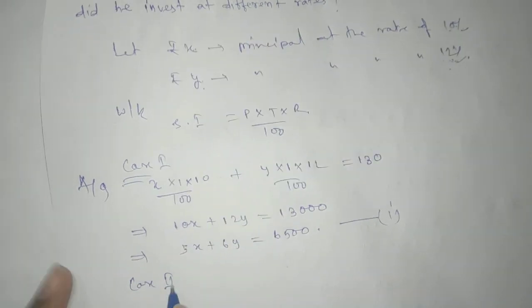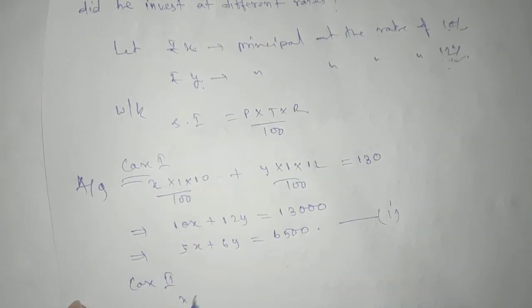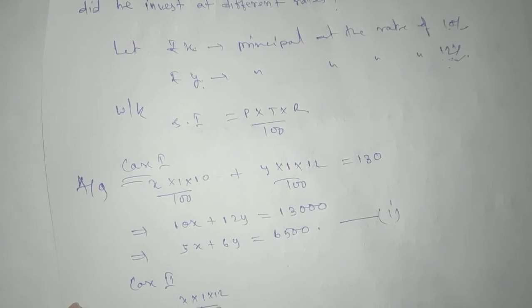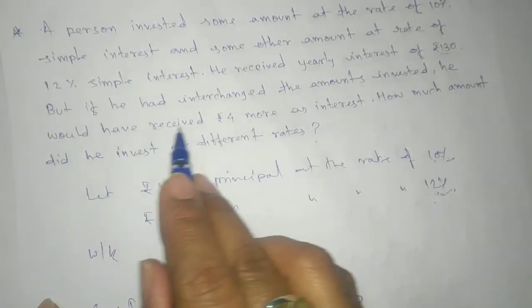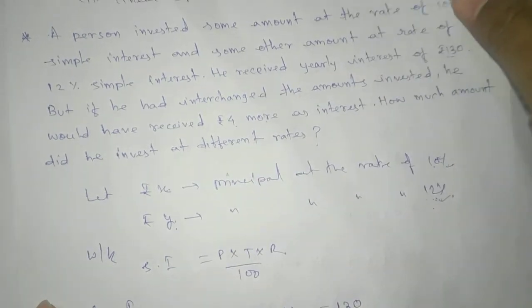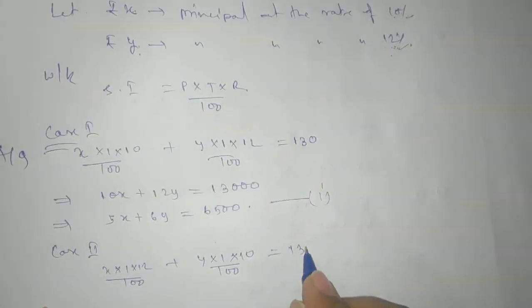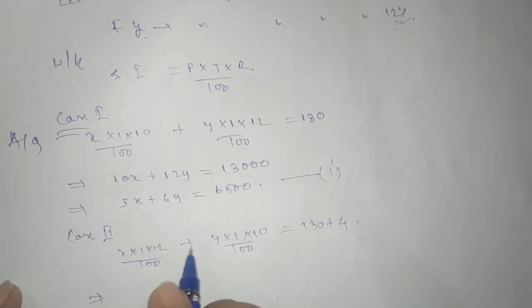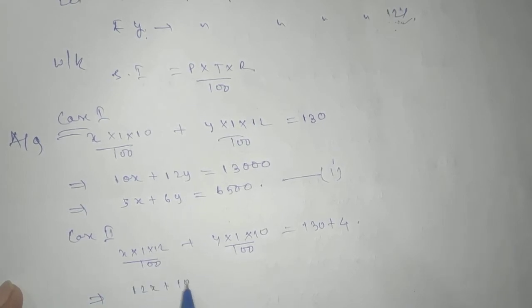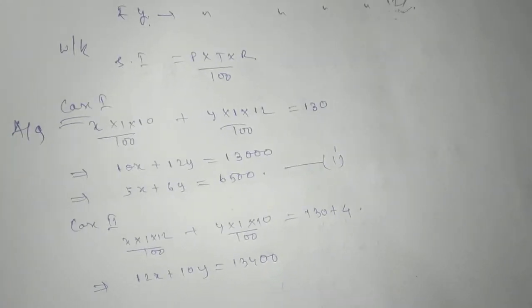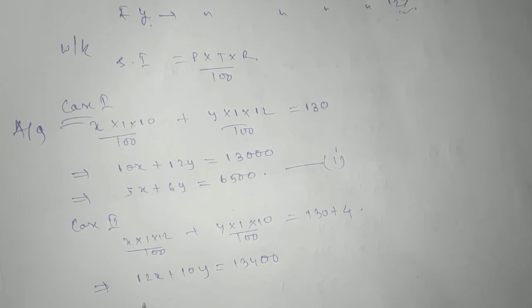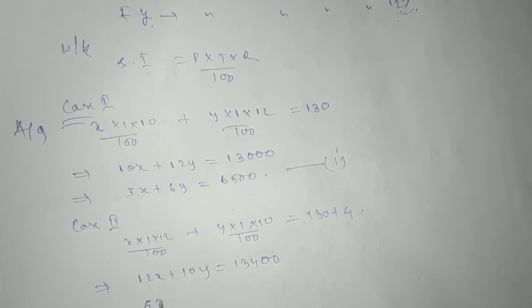Just a little bit change: x × 1 × 12/100 + y × 1 × 10/100. He receives four more as interest, so this will be 130 + 4. Make it simplest form: 12x + 10y = 13400. Take common 2: 6x + 5y = 6700. This is equation number two.